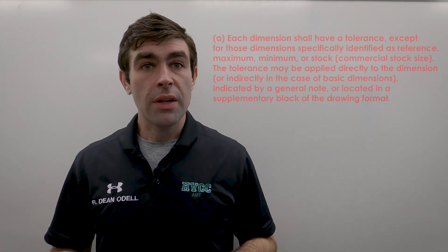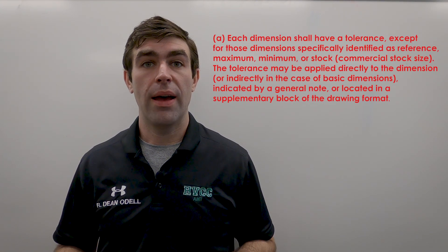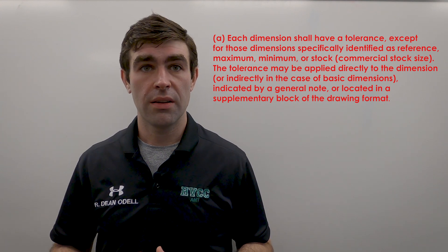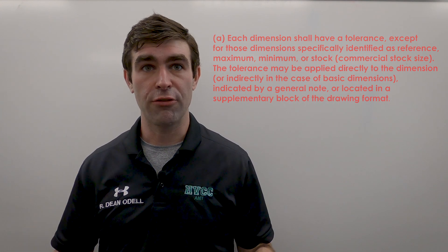Rule A: each dimension shall have a tolerance. This doesn't always mean you'll have a dimension plus or minus whatever. It could be directly toleranced, it could be a geometric tolerance, it could be a title block tolerance, or if it's a stock material, it could be toleranced in some handbook like pipes or lumber.